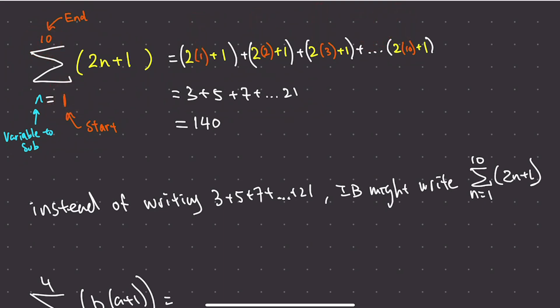So after writing this out, we can simplify it to this, because 2 times 1 is 2, plus 1 is 3. So we have this, and then 2 times 2 plus 1 is 5, and so on and so forth, and then we get the answer of 140.